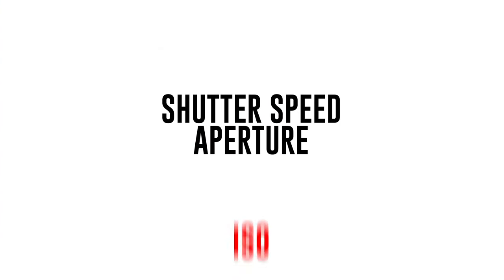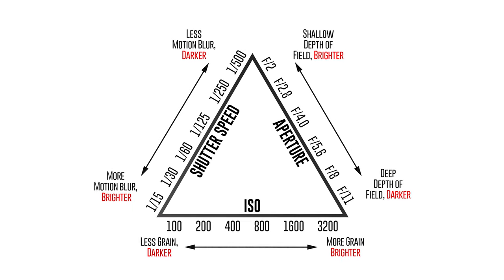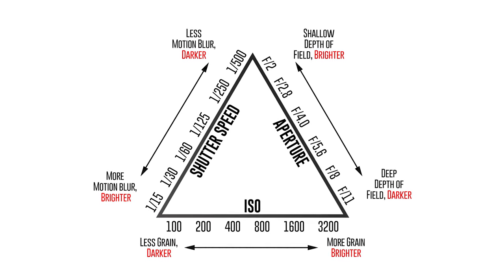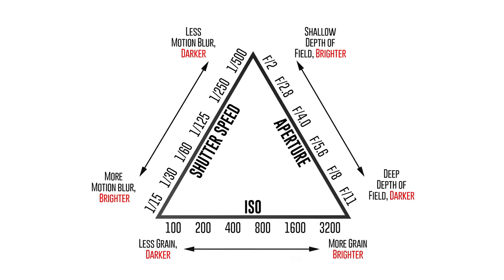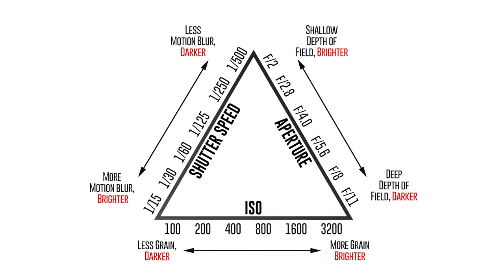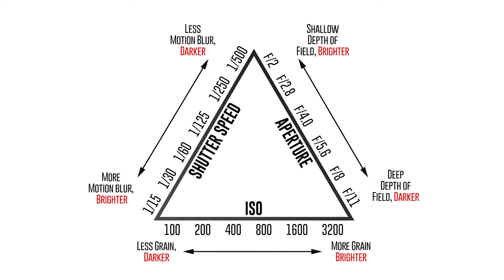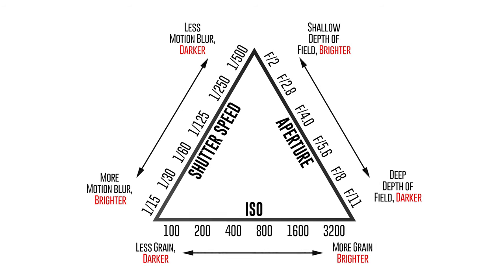Now, shutter speed, aperture, and ISO are three settings often represented by something called an exposure triangle. This is because all of them can affect the overall exposure, or the brightness of your picture. They also have secondary effects on motion blur, depth of field, and image noise, which we're going to talk about in a minute. The art of photography essentially involves balancing shutter speed, aperture, and ISO in order to create a picture.